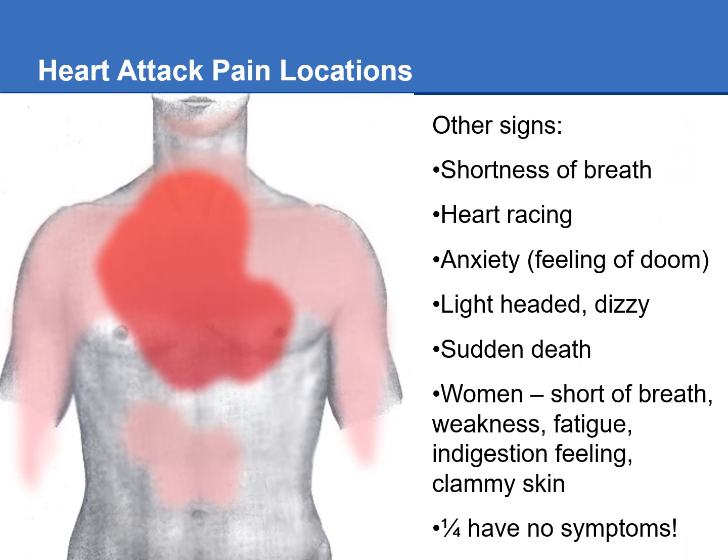Heart attack pain can appear in different locations. The heart, being a visceral organ, is innervated by C fibers, which create slow pain that's harder to localize. You also get referred pain — you can even end up with pain showing up in the left shoulder and down the left arm.